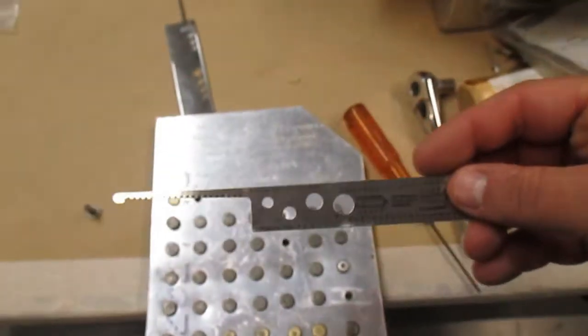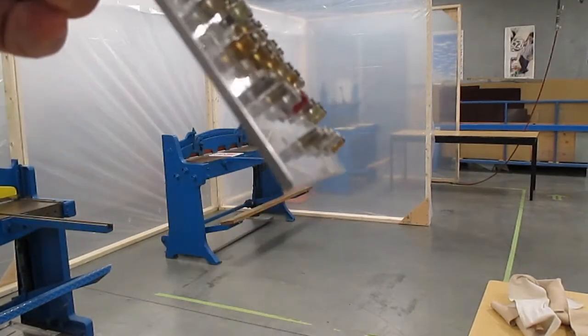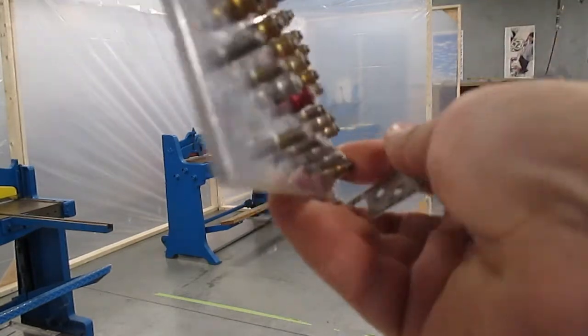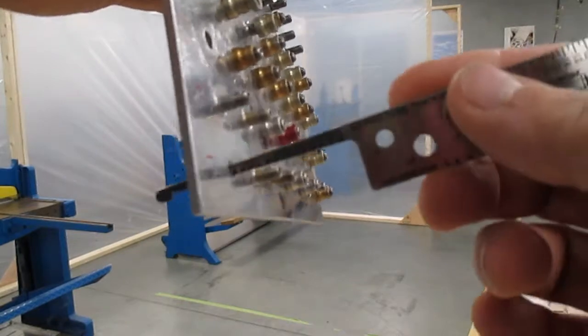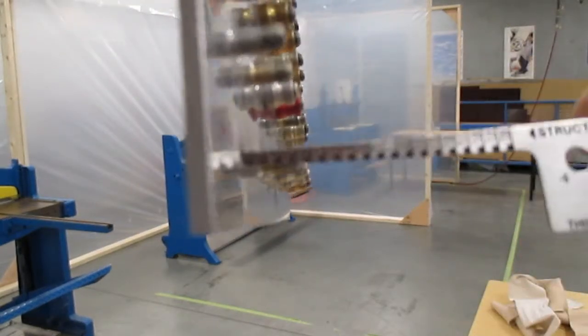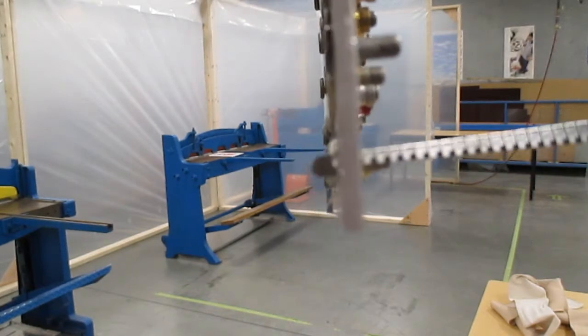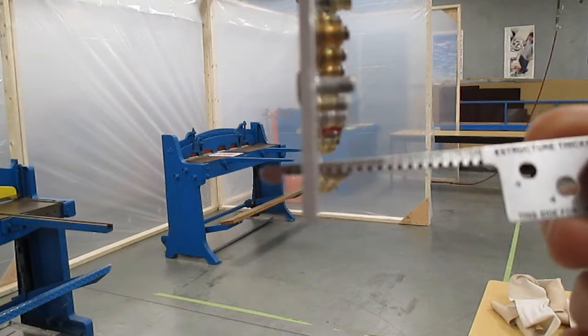And so there it is, the HiLock grip gauge. Choosing the right size for our HiLock. There's our piece of material. What we're going to do is use our grip gauge. We're going to stick it in the hole, just like a Cherrymax. We're going to pull it back.